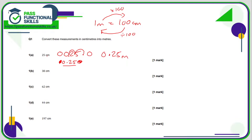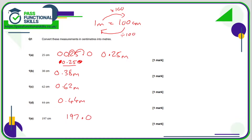So if 25 centimetres becomes 0.25 metres, then 38 centimetres will be 0.38 metres, 0.62 metres, and 0.44 metres. 197 centimetres is 197.0 — dividing by 100 we move the decimal point two positions, so that's 1.97 metres.